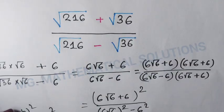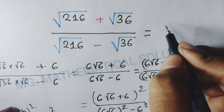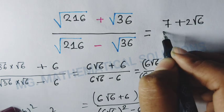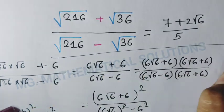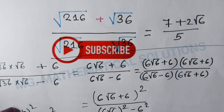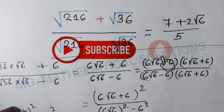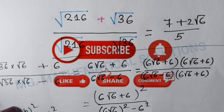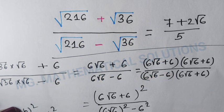So the final answer is (7 + 2√6) / 5. Thank you students for watching my video. If you like this video, please subscribe to my channel, click the bell icon for more content, and like this video.